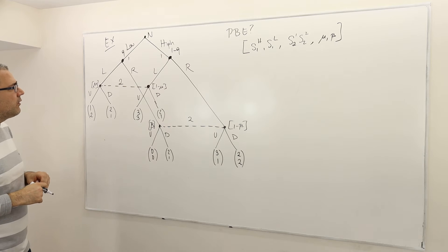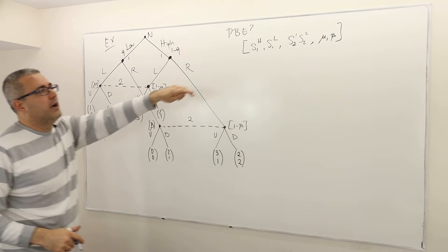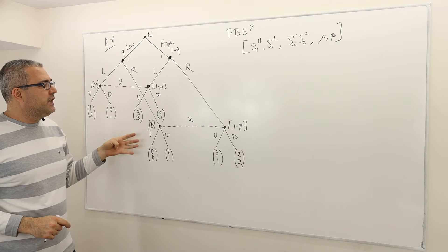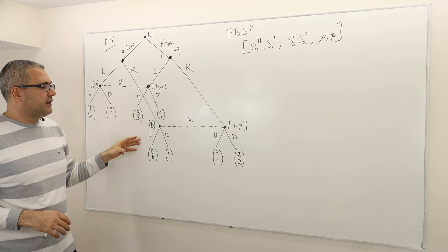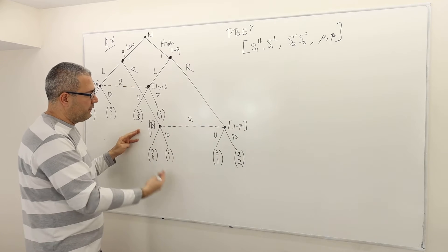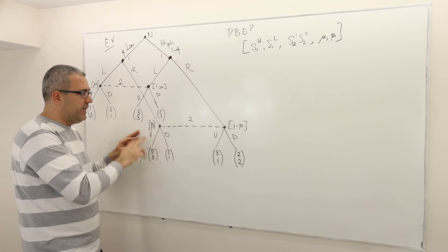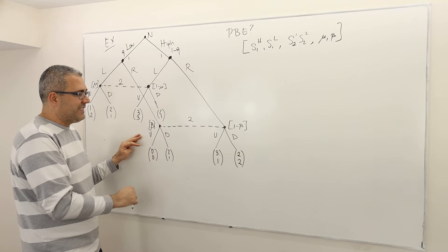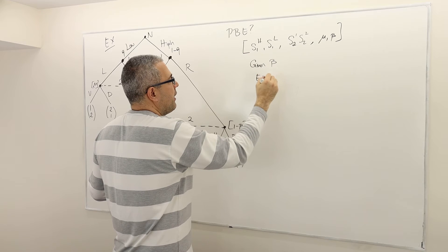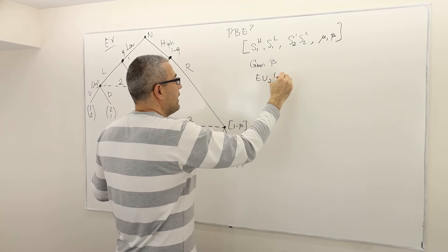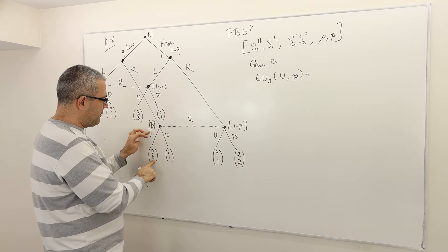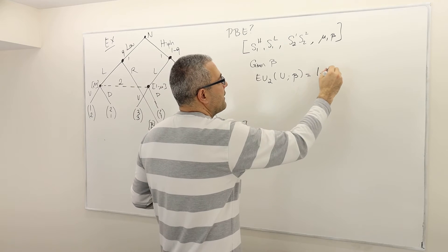Let's start by assigning those beliefs — that's requirement one. Requirement two: what is the sequentially rational or optimal strategy for player two given her beliefs? Let's first concentrate on this part of the game. Given that player two's belief is beta here, what is the optimal action — is it U or is it D? Given beta, the expected payoff of player two by playing U, given beta, is zero times beta plus one times one minus beta, which is one minus beta.